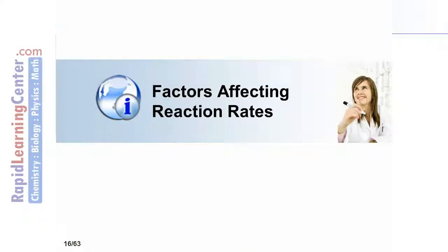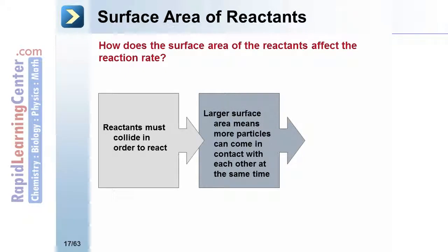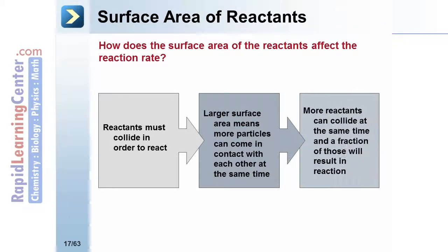What factors affect reaction rates? How does surface area affect reaction rate? Reactants must collide in order to react. Greater surface area means more can collide at the same time. More collisions at the same time means more successful collisions. As surface area increases, reaction rate also increases.